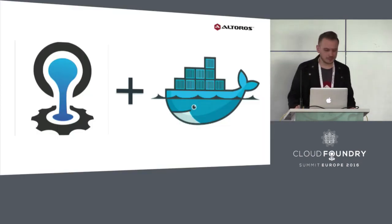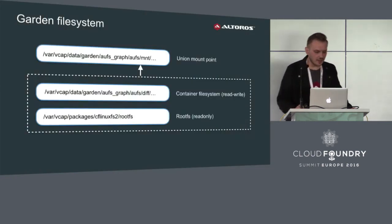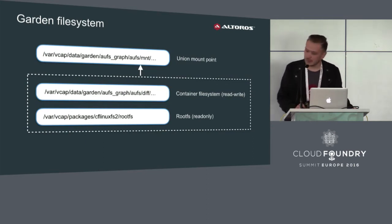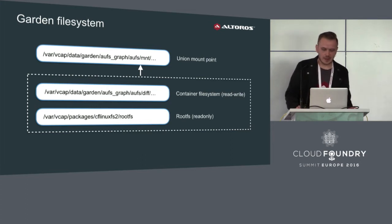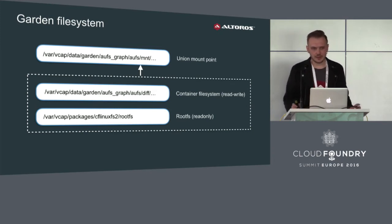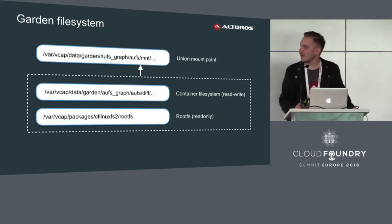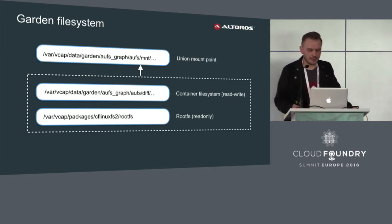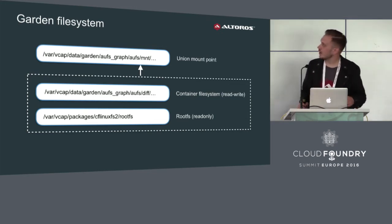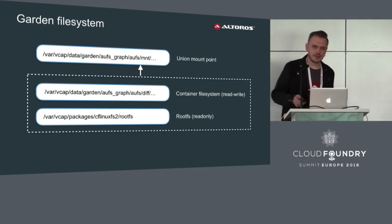How does it work? Garden, as Warden was, uses layered file systems. During the default buildpack lifecycle, the container manager takes a rootfs — basically a Linux root file system — and mounts it together with another layer containing the application bits, using AUFS by default or optionally overlayFS, to create a single file system with a single mount point to pivot_root to.